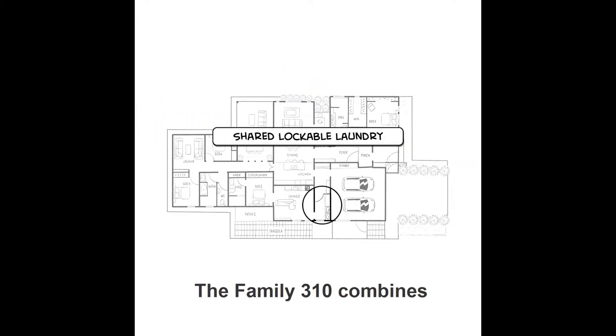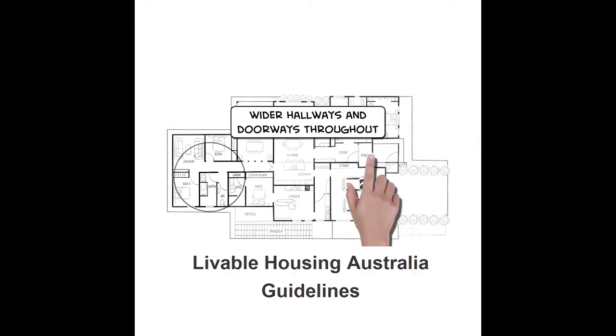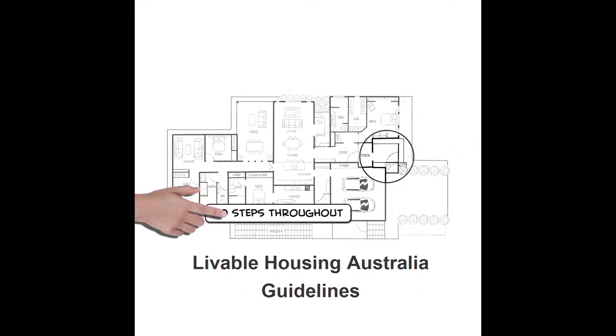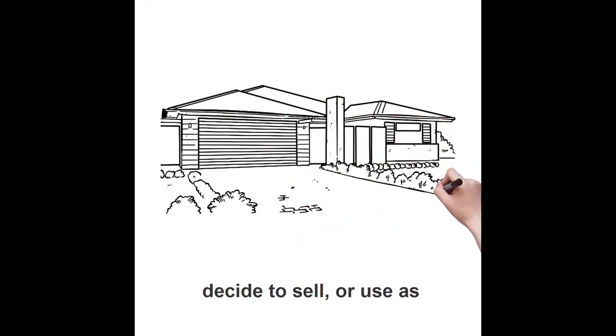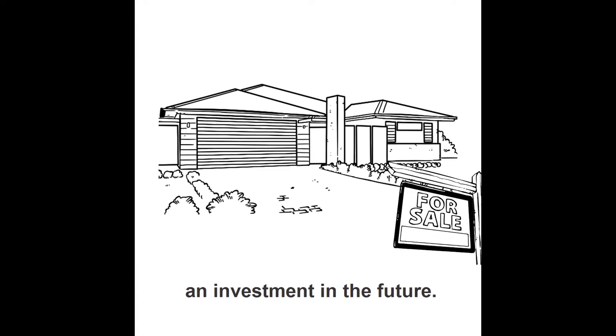The Family 310 combines elements of both silver and gold levels of the Liveable Housing Australia guidelines. Plus it gives them a market advantage if they decide to sell or use it as investment in the future.